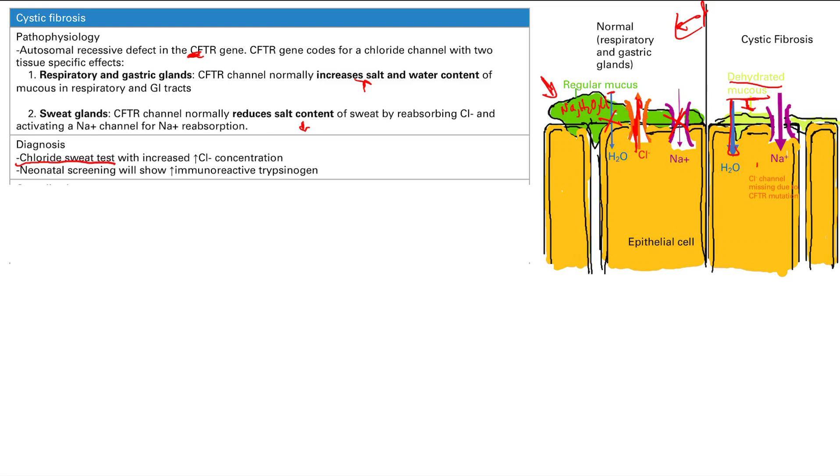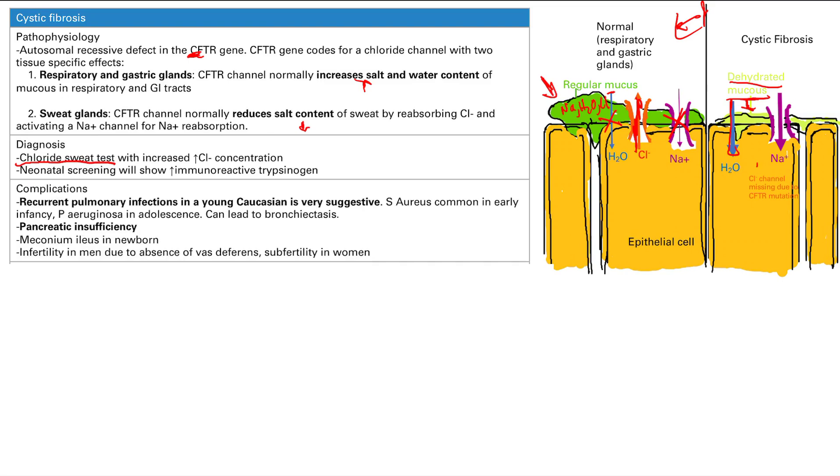The other way you can do this is now we do neonatal screening and we test for immunoreactive trypsinogen. If that's increased, that can also diagnose cystic fibrosis. Neonatal screening is when the baby gets born, we do a bunch of tests on them. We take their blood and do a bunch of tests to look for a lot of inherited congenital diseases.